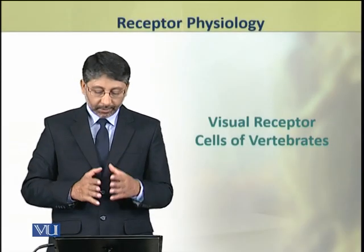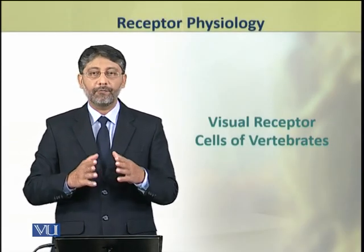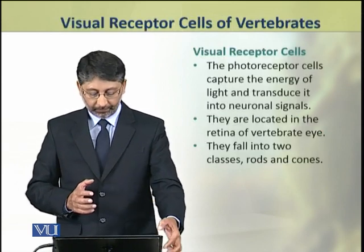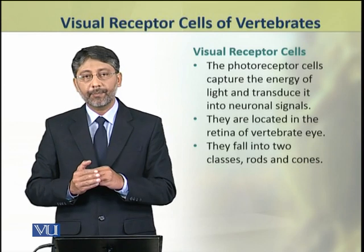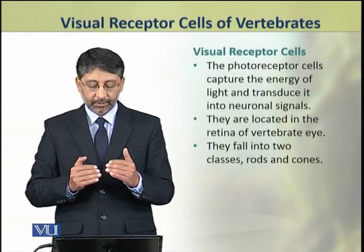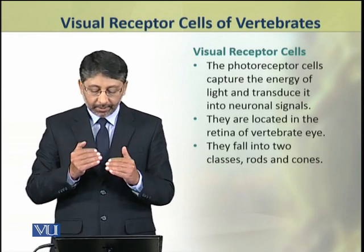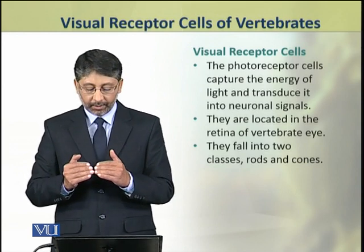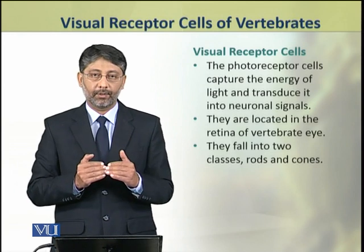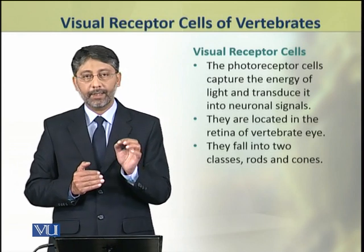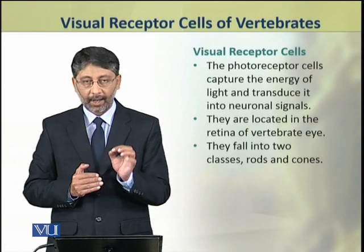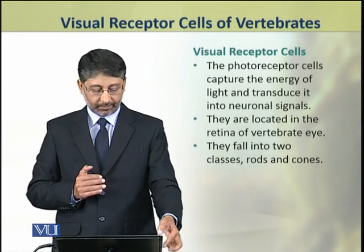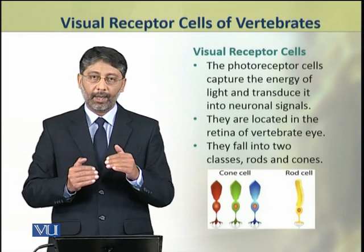In this topic we shall discuss the visual receptor cells of vertebrates. The visual receptor cells or photoreceptors capture the energy of light and transduce it into neuronal signals. They are located in the retina of the vertebrate eye. They fall into two classes: rods and cones.